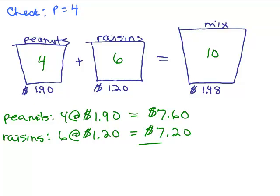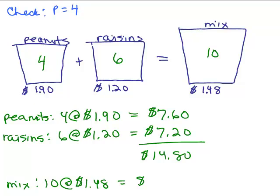So, how much would he have ended up paying if he would have bought the 4 pounds of peanuts and the 6 pounds of raisins? Well, his total amount is $14.80. The question is, is that the same thing as if he just bought the mix? Well, the mix is just a total 10 pounds and the whole mix per pound is just $1.48 per pound. And that's $14.80. And so, yeah, they're the same, so it all checks out.